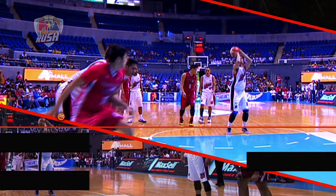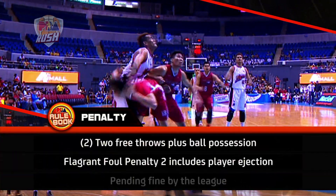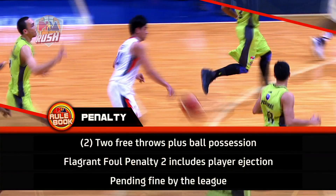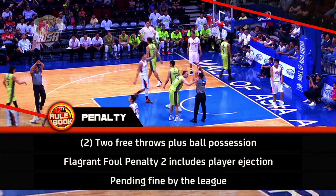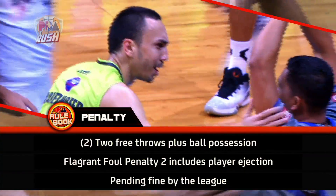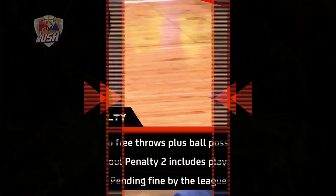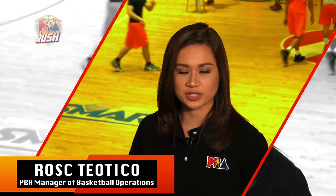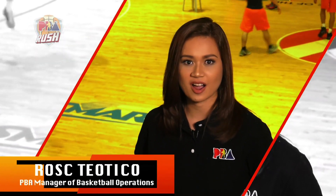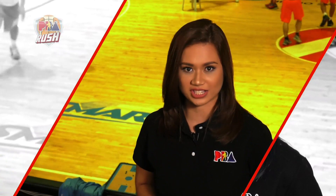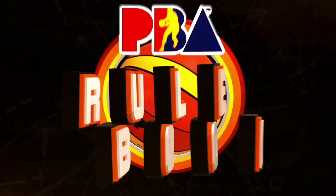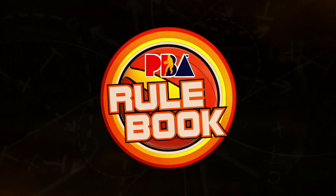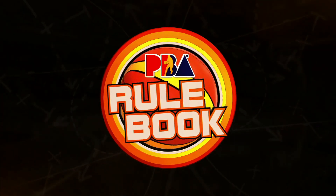A flagrant foul results with two free throws plus ball possession. The penalty two, however, includes a player ejection. Afterwards, the league reviews the play and decides on the amount of the fines. For more on the PBA rulebook and your everyday dose of basketball, keep it here on PBA Rock.